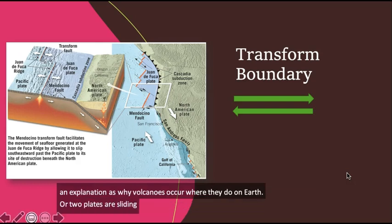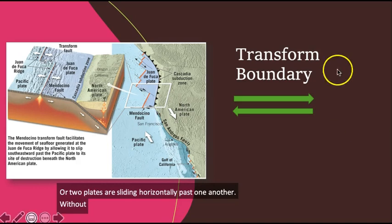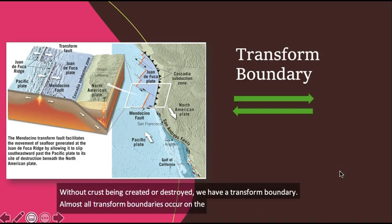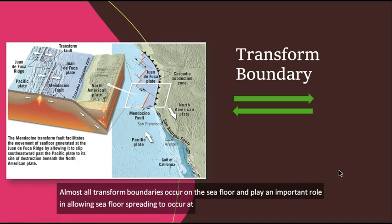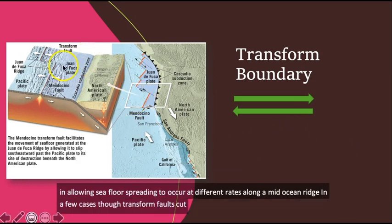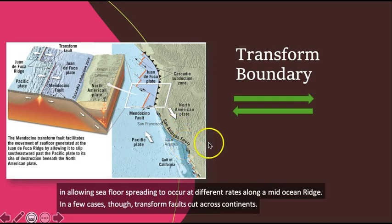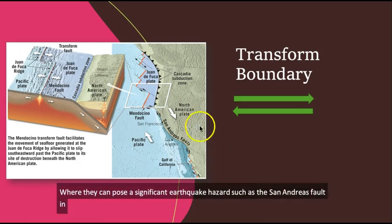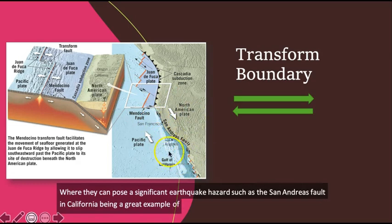Where two plates are sliding horizontally past one another, without crust being created or destroyed, we have a transform boundary. Almost all transform boundaries occur on the seafloor and play an important role in allowing seafloor spreading to occur at different rates along a mid-ocean ridge. In a few cases, though, transform faults cut across continents where they compose a significant earthquake hazard, such as the San Andreas Fault in California, being a great example of a transform boundary and transform fault.